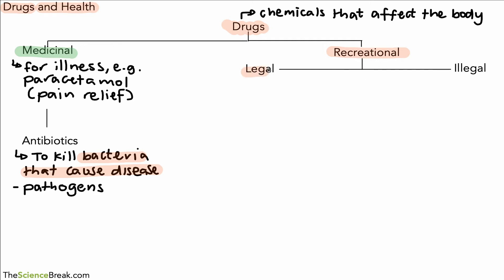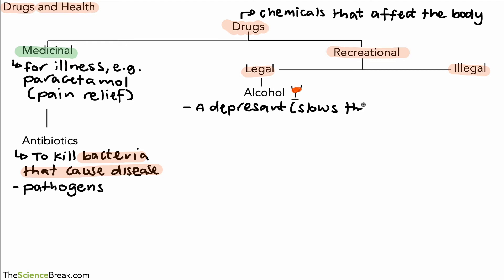In terms of recreational drugs, we have legal ones and illegal ones. One common legal recreational drug is alcohol, found in lots of different types of drinks. Alcohol is described as a depressant — a drug that slows down the nervous system.